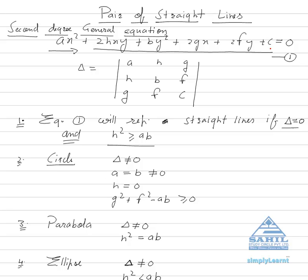We define delta (Δ) as a determinant with entries a, h, g, h, b, f, g, f, c. Here, a is the coefficient of x², h is half the coefficient of xy, b is the coefficient of y², and the rest can be understood from the equation.